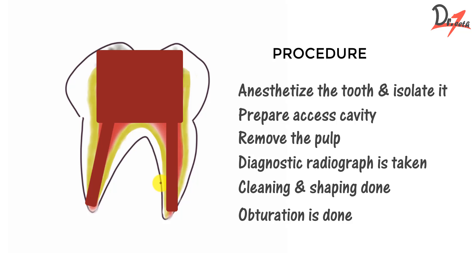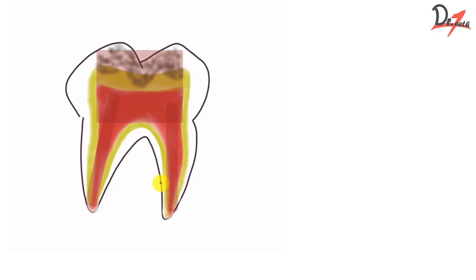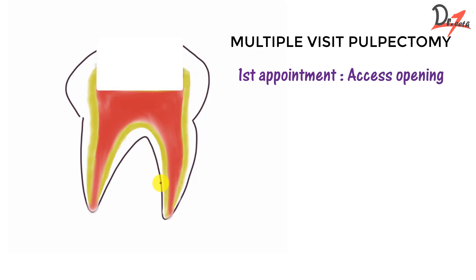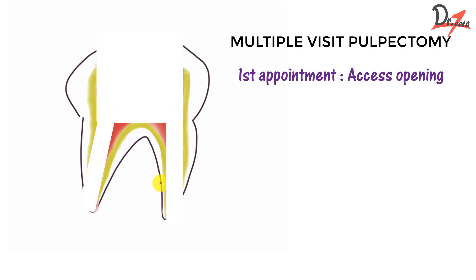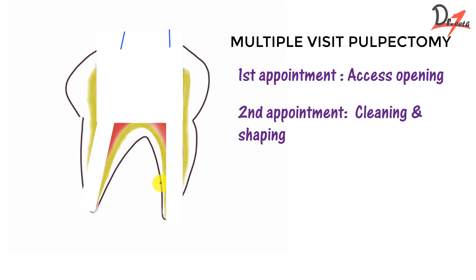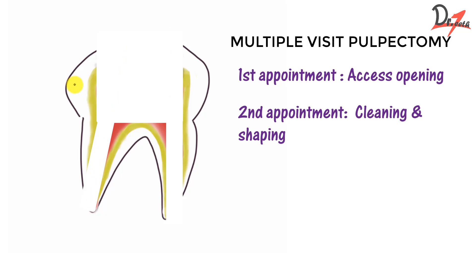In cases where there is infection, pus, or abscess, we go for multiple-visit pulpectomy, typically three appointments. The first appointment involves access opening: anesthetize the tooth, prepare the cavity, de-roof the pulp chamber, remove all pulp tissue using barbed broaches, then place a formacresol cotton pellet in the chamber and give a temporary restoration. At the second appointment after one week, remove the temporary restoration, file the canal, complete the biomechanical preparation, determine the working length, follow generous irrigation and debridement, then place a sterile cotton pellet in the chamber and give a temporary restoration.